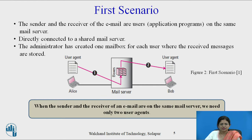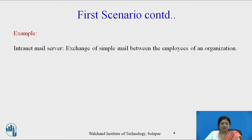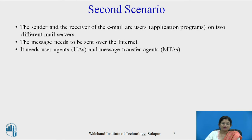In a nutshell, when the sender and the receiver of an email are on the same mail server, we need only two user agents. For example, an intranet mail server is used for the exchange of simple mail between employees of an organization, and it requires only two user agents.